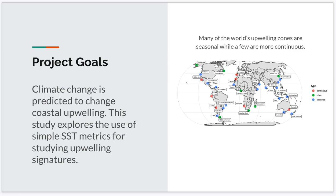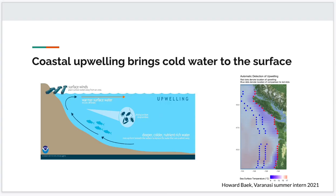On the right you see a graphic of many of the world's upwelling zones — these are the major upwelling zones, and there are different types: continuous and seasonal, shown in different colors, and they're all over the world. For this talk, there's really only one thing you need to know about coastal upwelling: it brings cold water to the surface next to the coast.